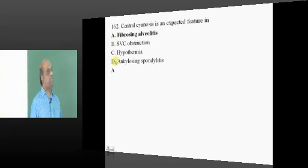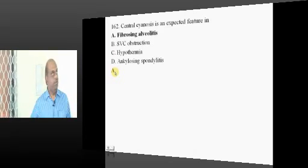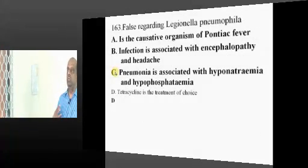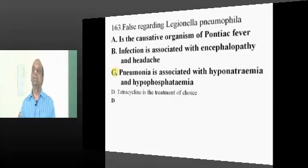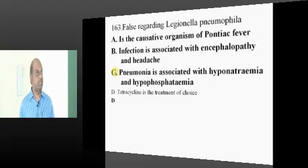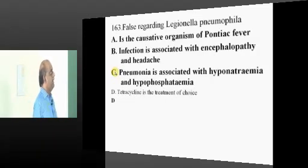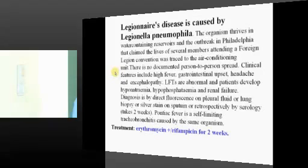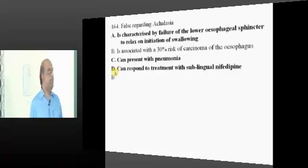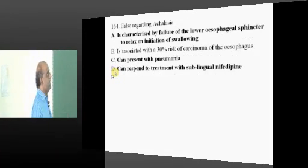Central cyanosis — where do you typically see it? In fibrosing alveolitis, due to hypoxia at the alveolar level, there is cyanosis. For Legionella pneumophila, the treatment is erythromycin or rifampicin as a major part of management.